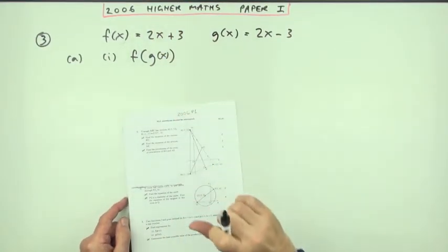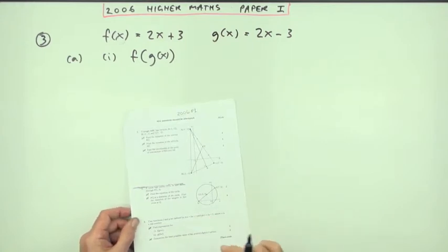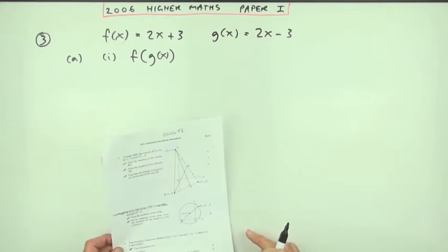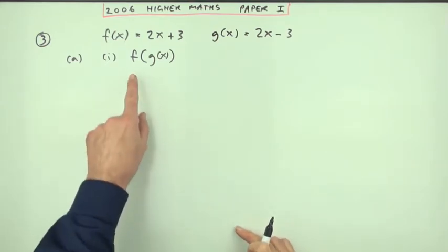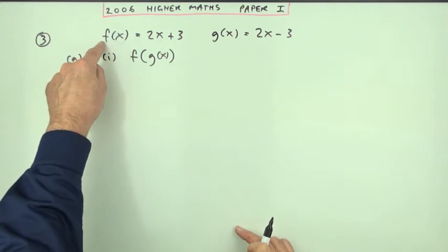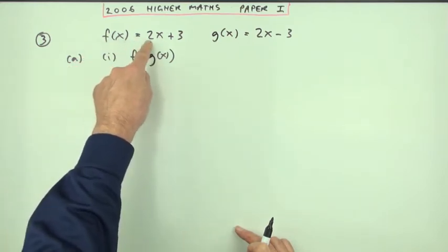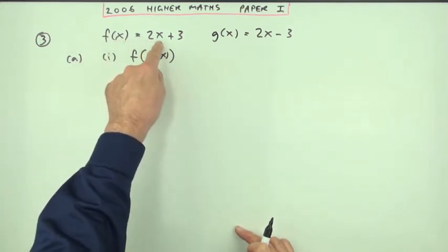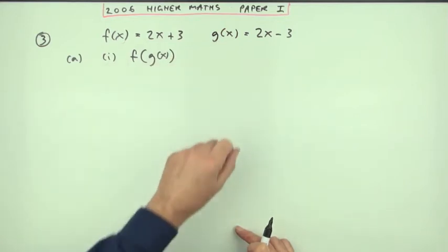Number three from the 2006 higher maths paper one, functions of functions, a five mark question and a quite easy one. Here what have we got to do for the first part? Find f of g of x where f is this function which says whatever you put in you double it and add three, and g is this function.